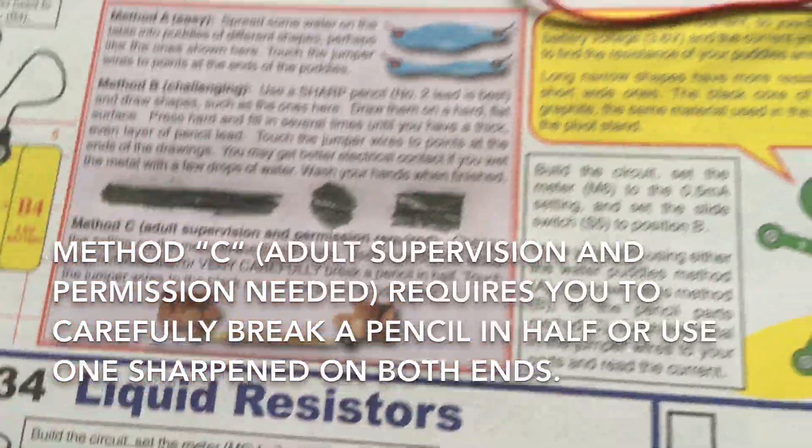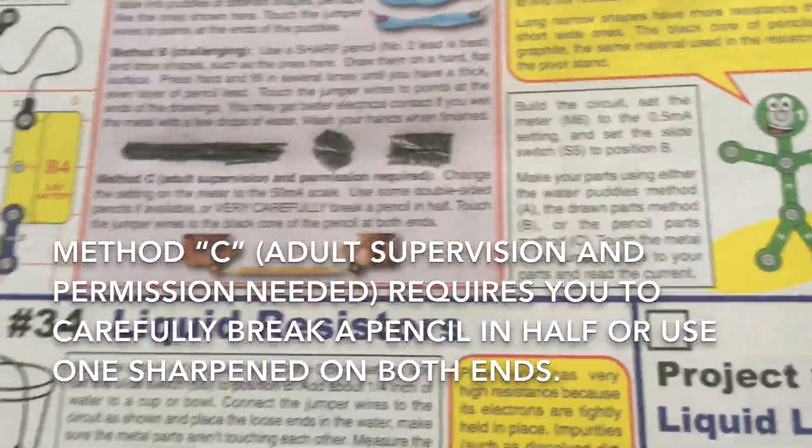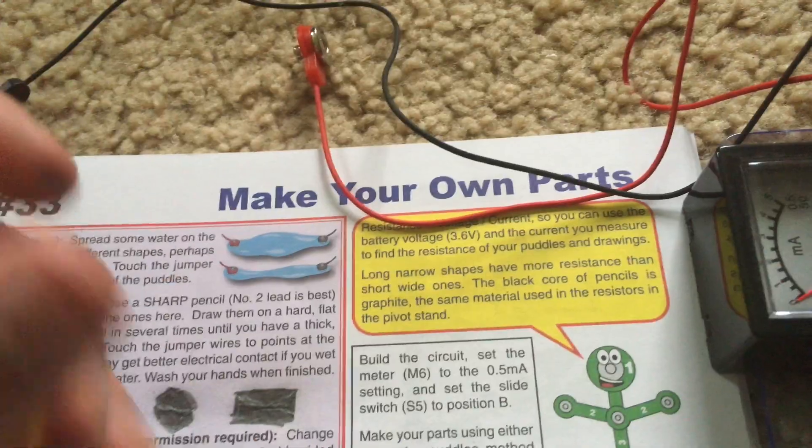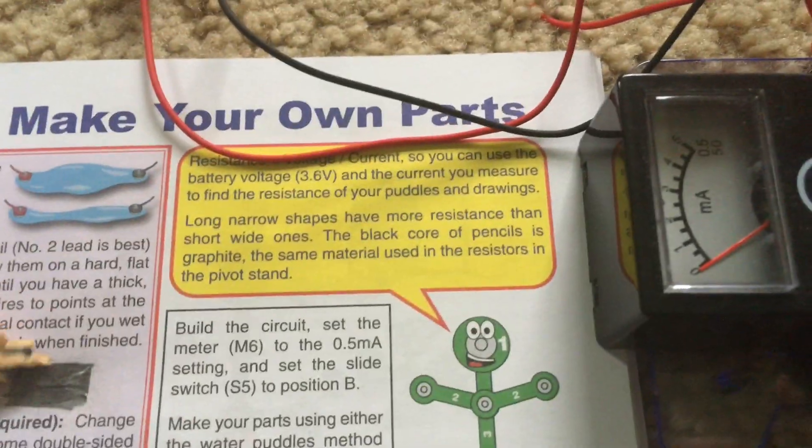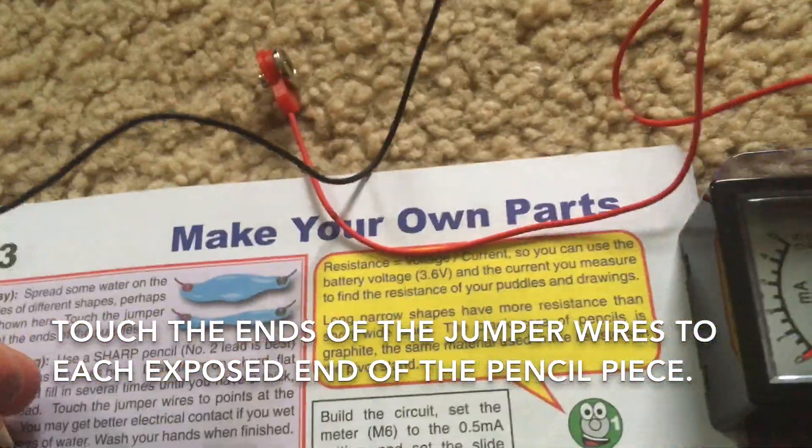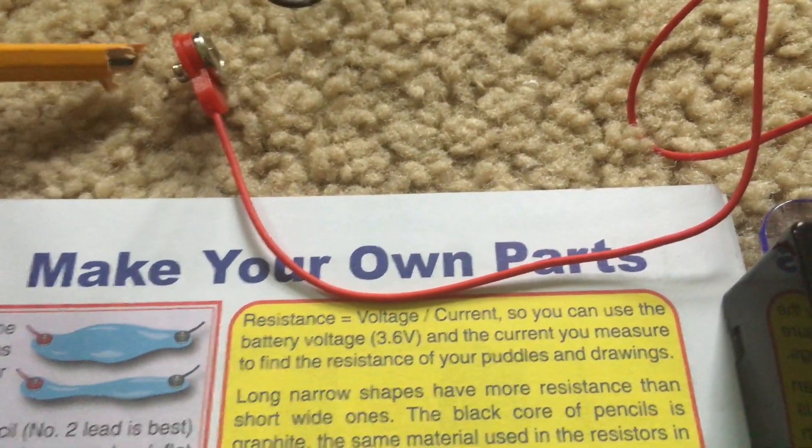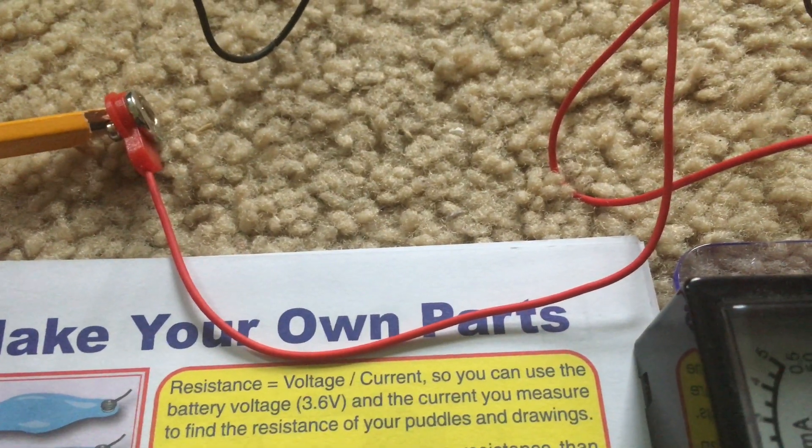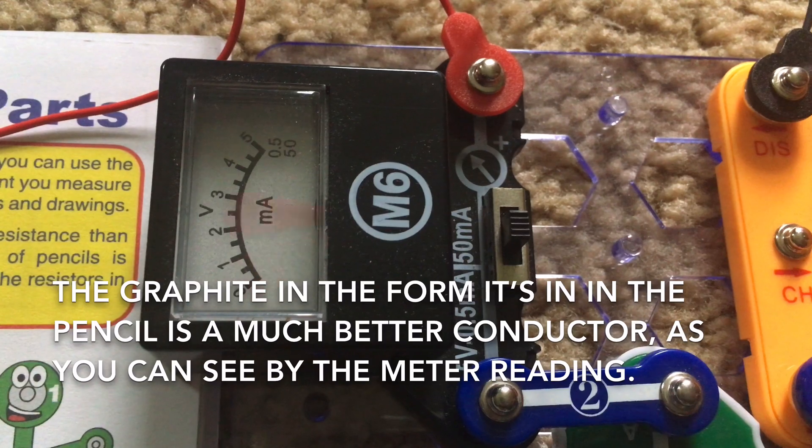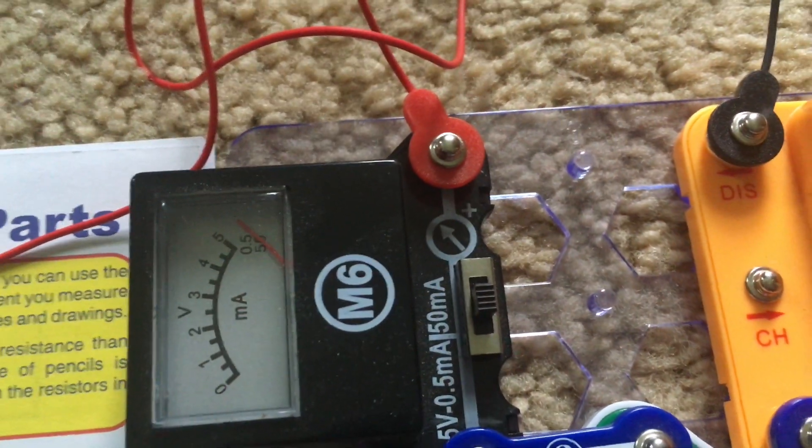Method C, which requires adult supervision if you are a child and permission, requires you to either sharpen a pencil on both sides or very carefully break a pencil in half and then touch the wires to the lead. I'm going to try to put the pencil point into this wire and then contact the red jumper wire with the lead. And look what happens. It acts like a perfect conductor for the current to flow through and power up the meter all the way.